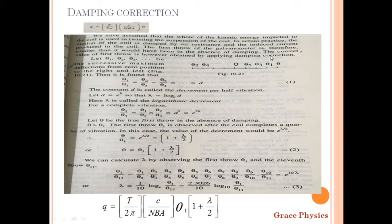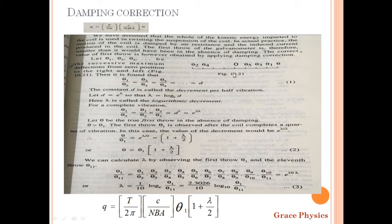Due to the restoring couple — the restoring torque — the coil moves in the opposite direction. Theta2 is the deflection on the opposite side. Then it goes back: theta3, theta4, and so on. We measure theta1, theta2, theta3, theta4 as successive deflections, in alternating directions.